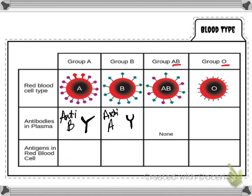Blood group AB isn't going to have any of these antibodies, because if they did, they would be attacking their own blood, and that would be a huge problem. So what kind of antibodies is blood group O going to have? That's right — they're going to have anti-A, so they're going to have the roundies here. But they're also going to have anti-B to grab those little diamonds. So you've got both anti-A and anti-B if you are blood group O.